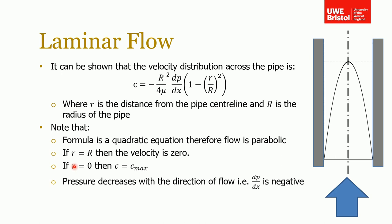On the other hand, if R is equal to 0, i.e. we're on the centerline, then this term becomes 0, so this bracket becomes 1 and we have our maximum velocity.